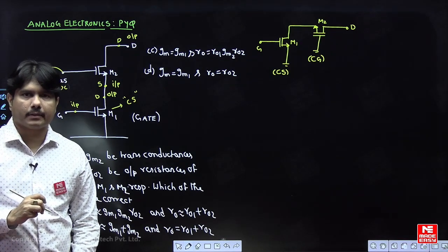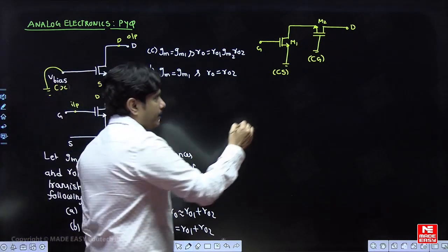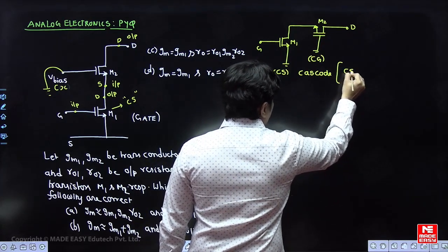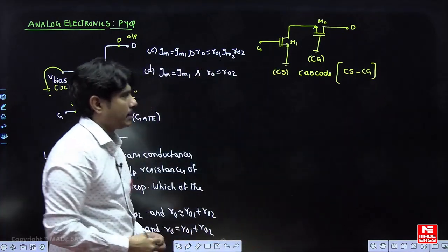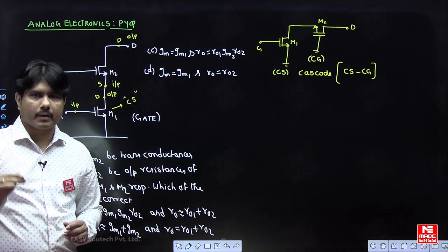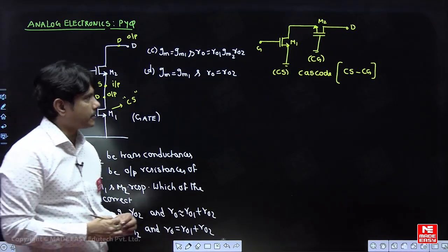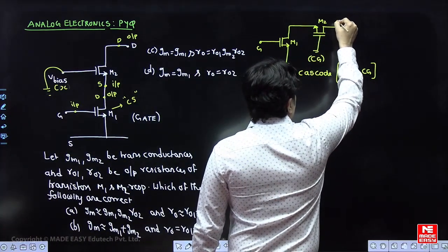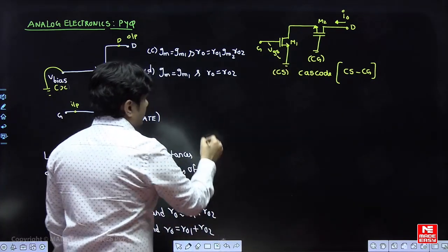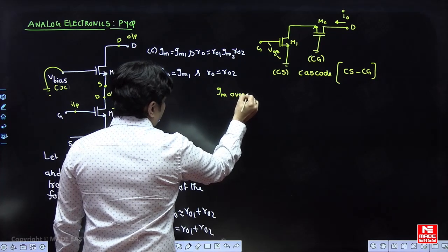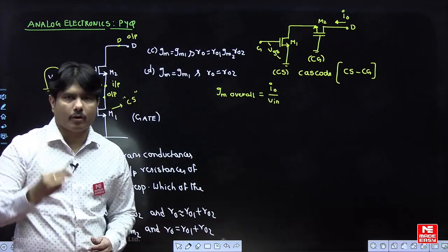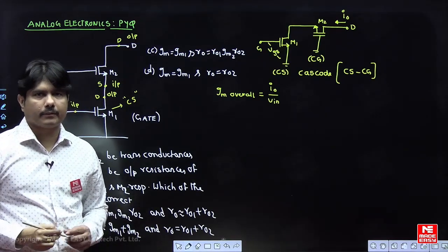Whenever you cascade a common source with a common gate in analog electronics, we do not call it a cascade — there is a special word: we call it a cascode amplifier. So the circuit is identified as a cascode system. Cascode is an interconnection of common source and common gate. Now, the overall GM of the circuit is defined as: if the output current is I_out and the input voltage is Vgs, then GM overall equals output current divided by input voltage.